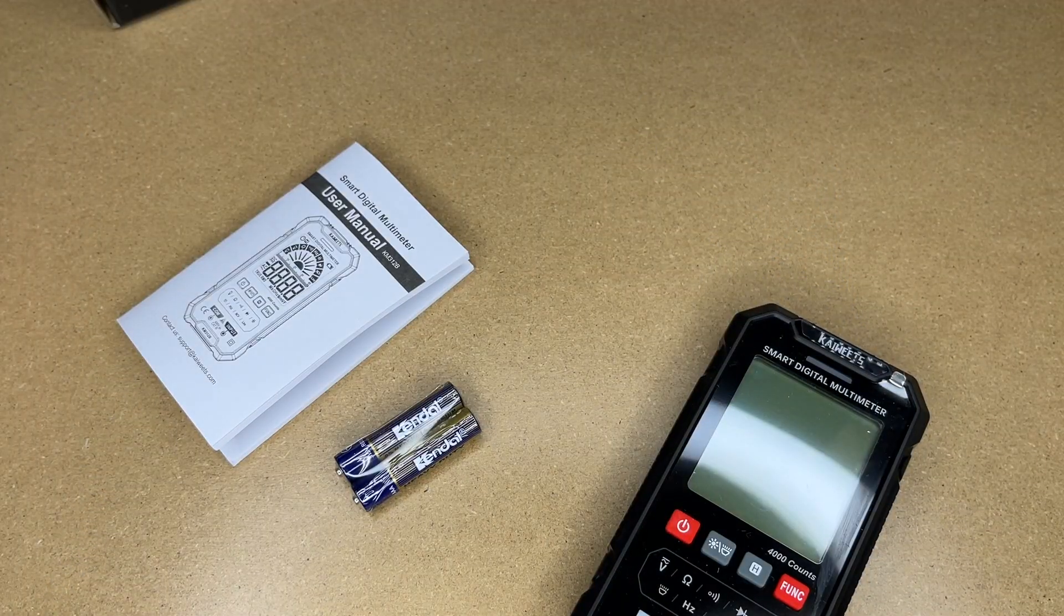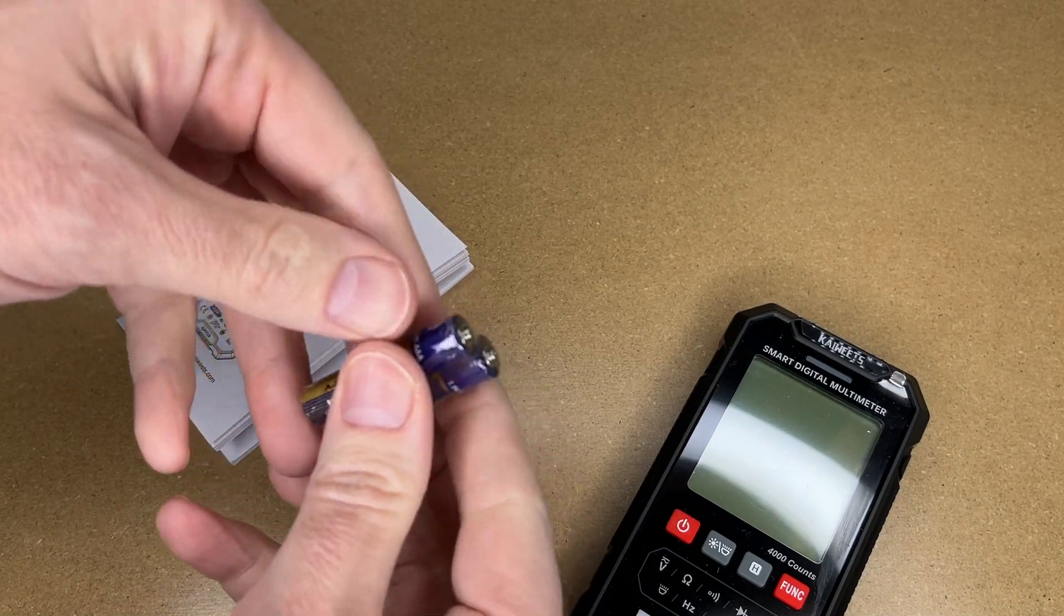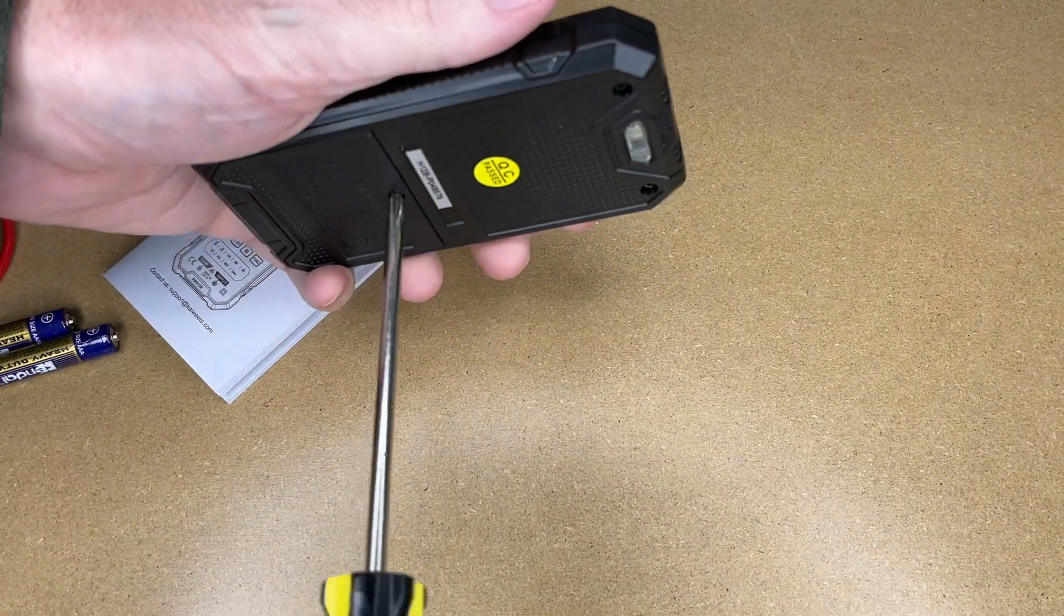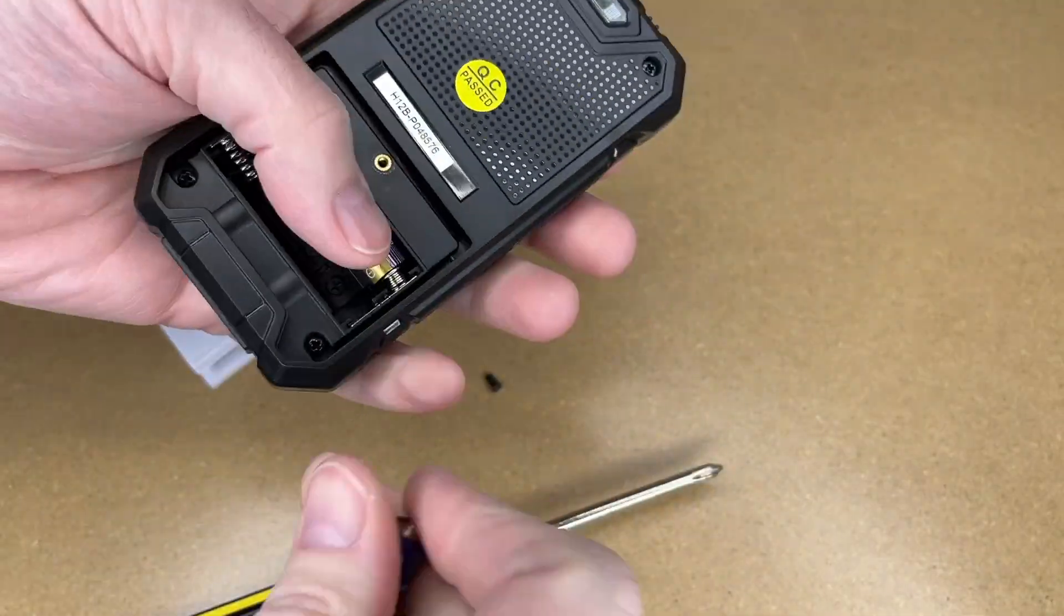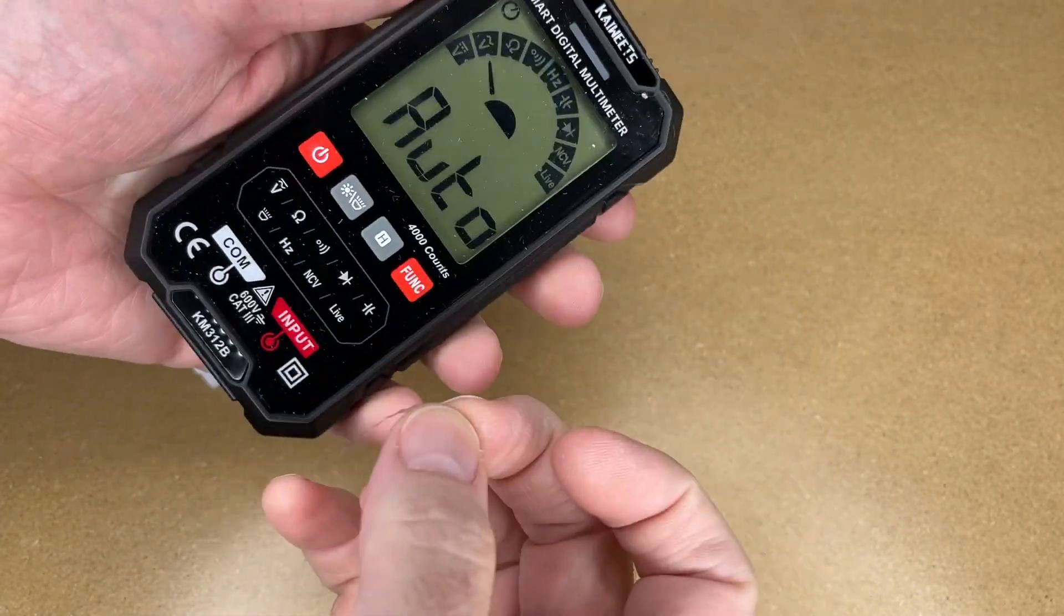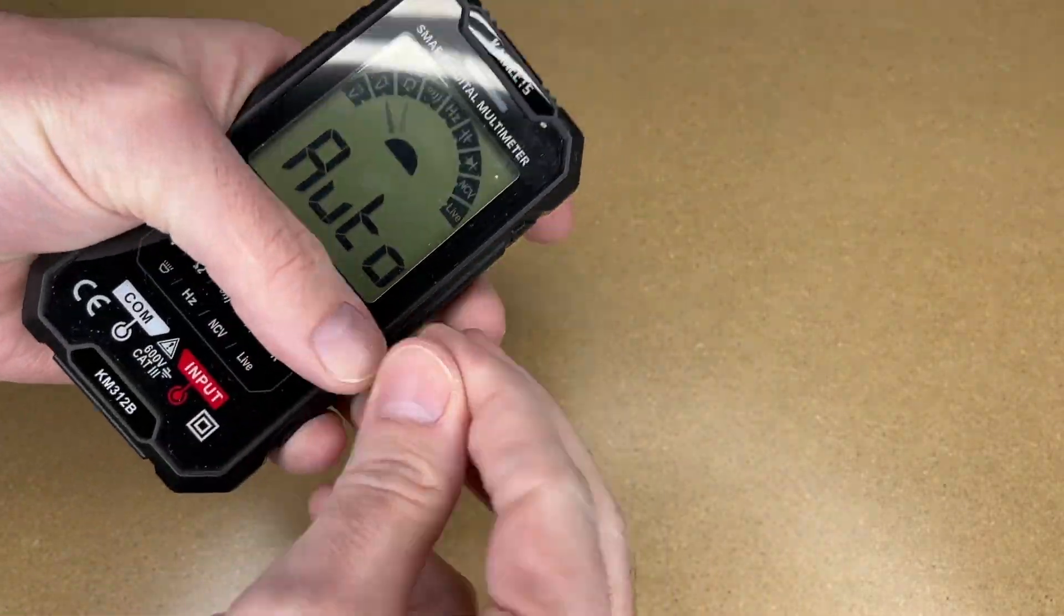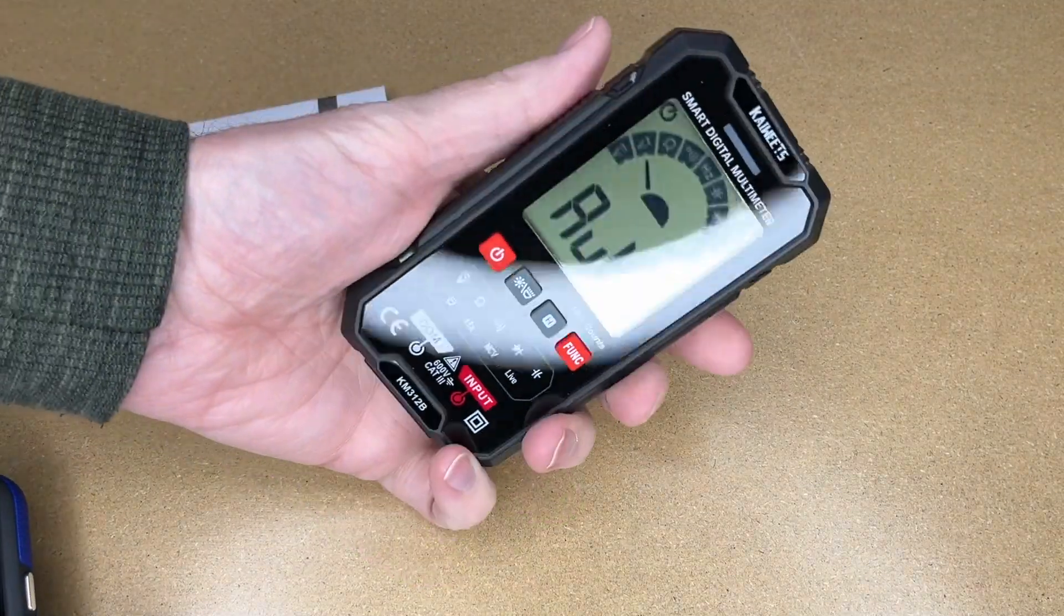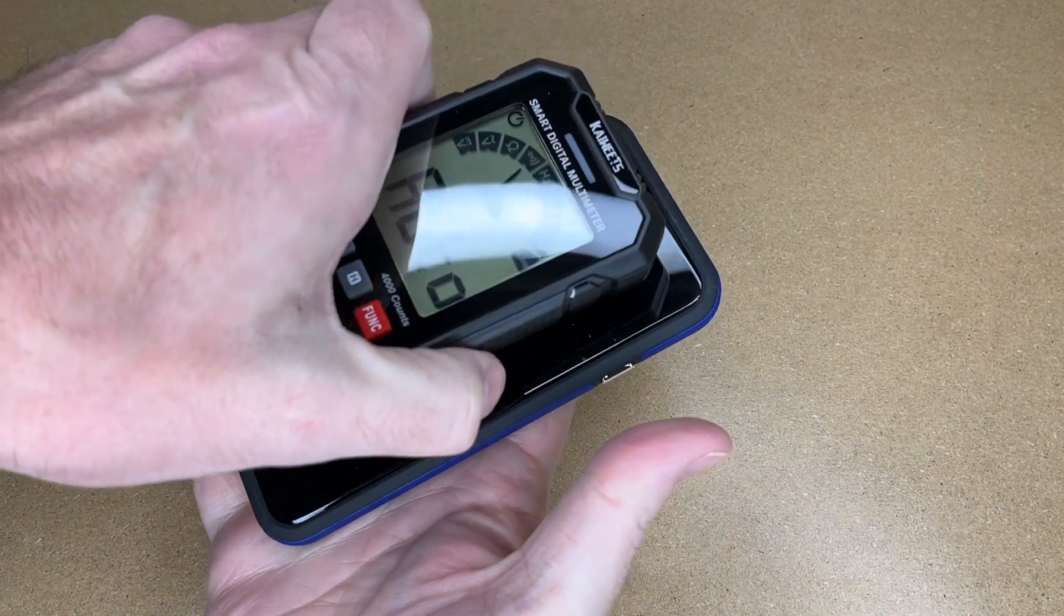Here we have the meter, the leads, the manual, and some batteries. It takes two triple-A batteries. Let's put the batteries in—they go in the back here. I'll loosen this screw. There we go. There's a little bit of plastic here I want to peel off.